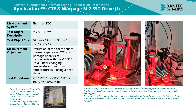Figures 2 and 3 show the thermic DIC system for this measurement application. Red illumination lighting is used with two cameras mounted on a motorized traverse. A liquid nitrogen tank is used to cool the heating plate. For small test objects, a gimbal mount is used to adjust and orient the calibration target for better projection computation. A thermocouple controller, DAQ controller, and heating stage controller are also pictured.